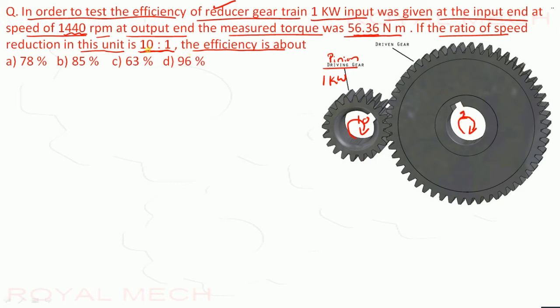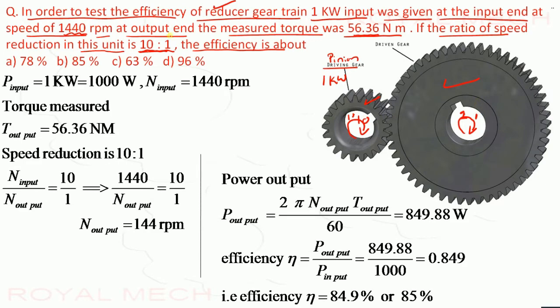So in case they had given it as 1 is to 10, then the driver is this, driven will be this. So given it is 10 is to 1, so smaller gear has 10 revolution, bigger gear has 1 revolution.